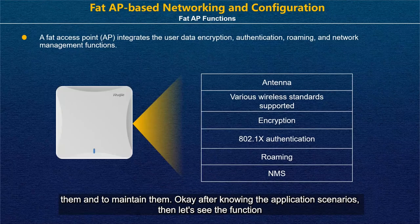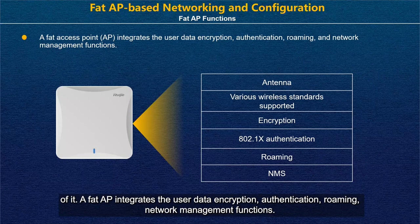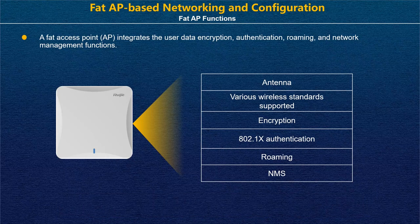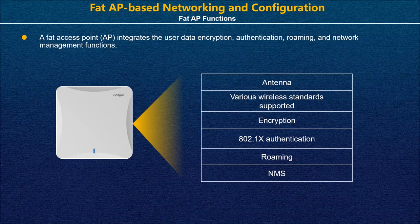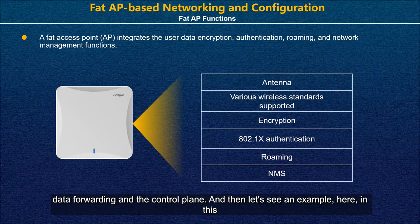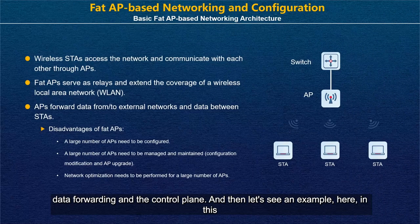After knowing the application scenario, let's see the functions. A FATAP integrates user data encryption, authentication, roaming, and network management functions. Since it works independently, it is responsible for both data forwarding and the control plane.